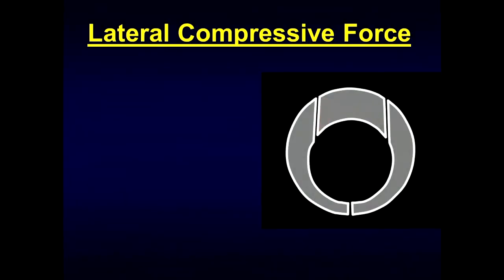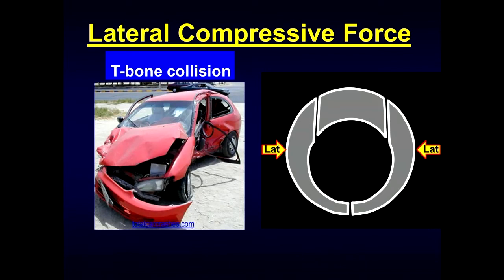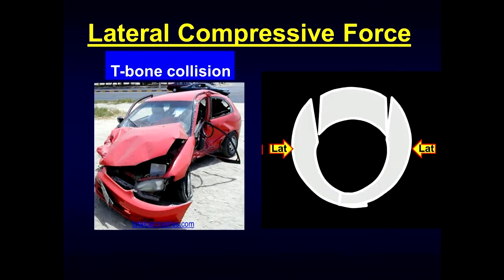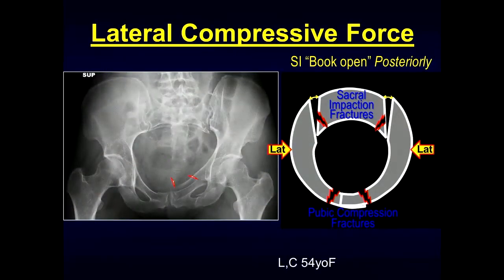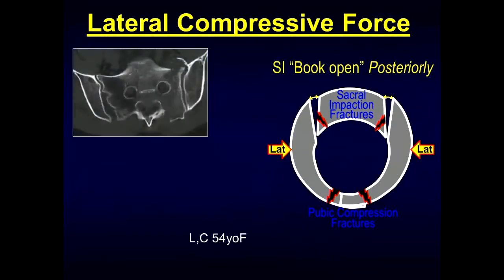Moving on to lateral compressive type forces — these are commonly seen following a T-bone collision. What occurs here is pubic compression fractures, sacral impaction fractures, and the SI joints can book open posteriorly. On the radiograph with this type of injury we can see the pubic rami fractures, that inferior pubic rami fracture, and the contralateral other side showing pubic fractures and fractures of the sacrum. On CT, we can see that sacral fracture as well as the widening posteriorly of the contralateral sacroiliac joint.